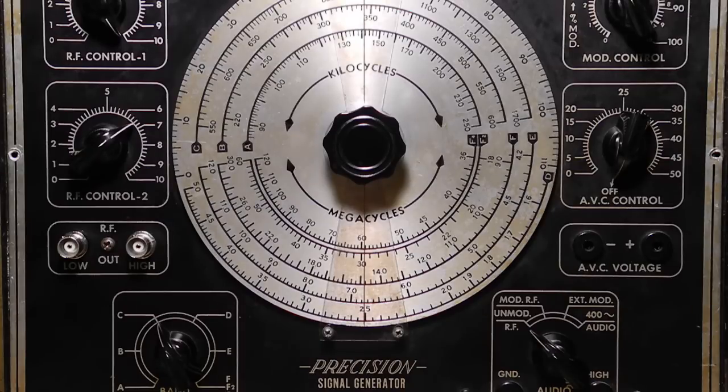Band F can also be used on the second and third harmonics of the fundamental frequency and is marked on the dial as ranges F1 from 18 to 60 MHz and F2 from 36 to 120 MHz.